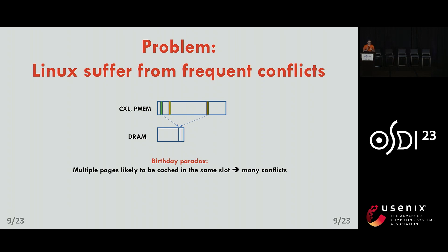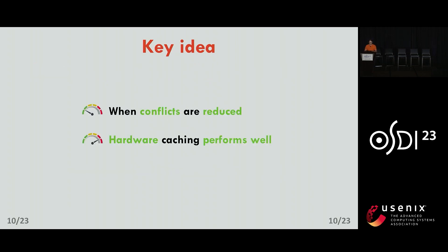Linux suffers from something like a birthday paradox: even though a year has many days, it doesn't take many students to have two with the same birthday. Similarly, even though the DRAM cache is very large, it doesn't take many pages to have two pages map to the same cache location. So in Linux, even if an application doesn't allocate a lot of data, chances are that data will conflict in the cache. The key idea of this talk is that it's actually possible to reduce the number of conflicts in a DRAM cache, and when you do so, the DRAM cache works better than managing tiers manually in software.